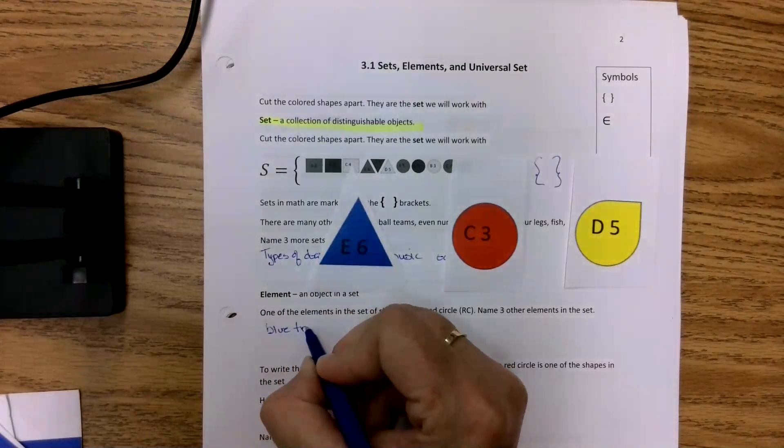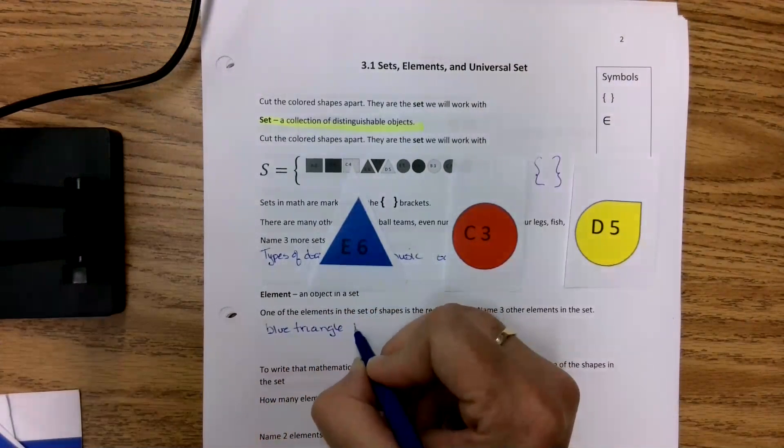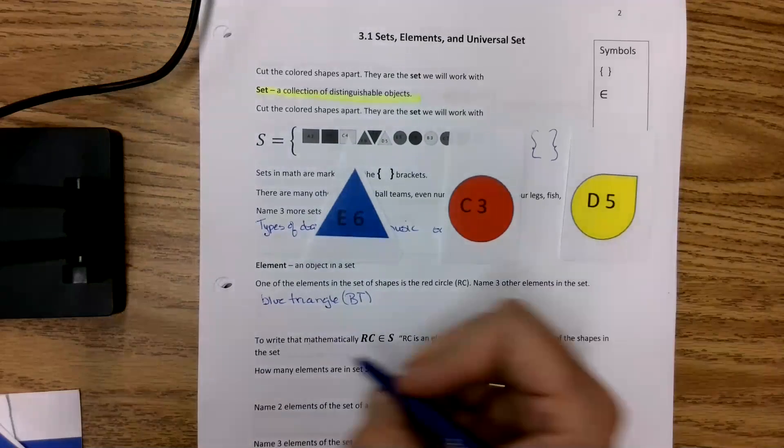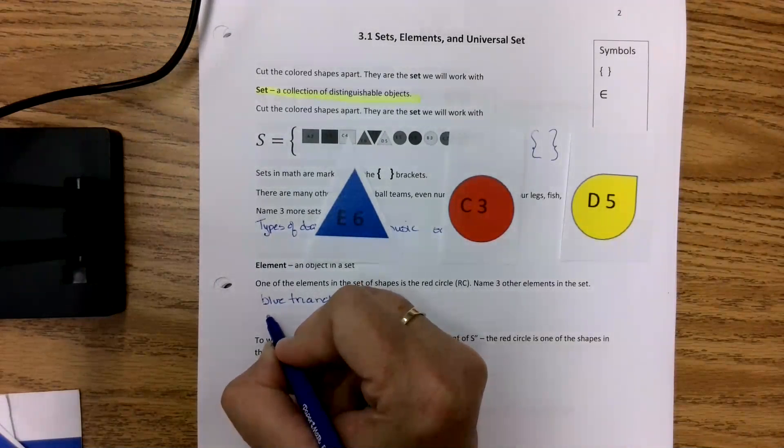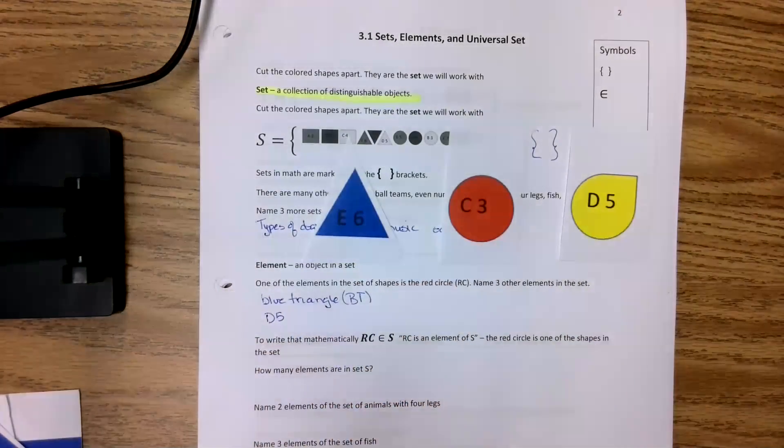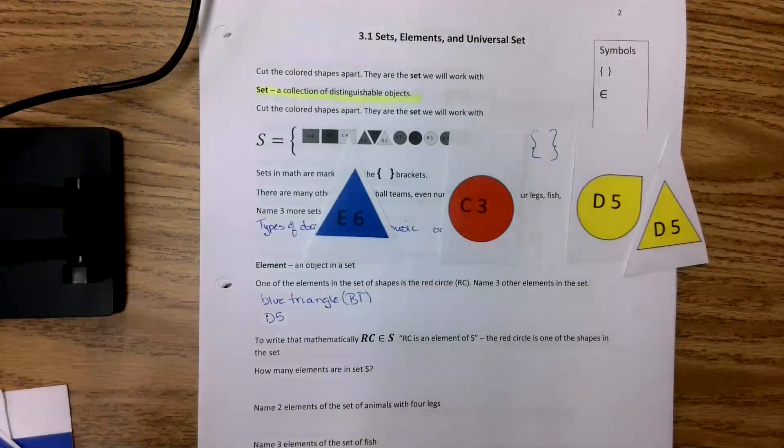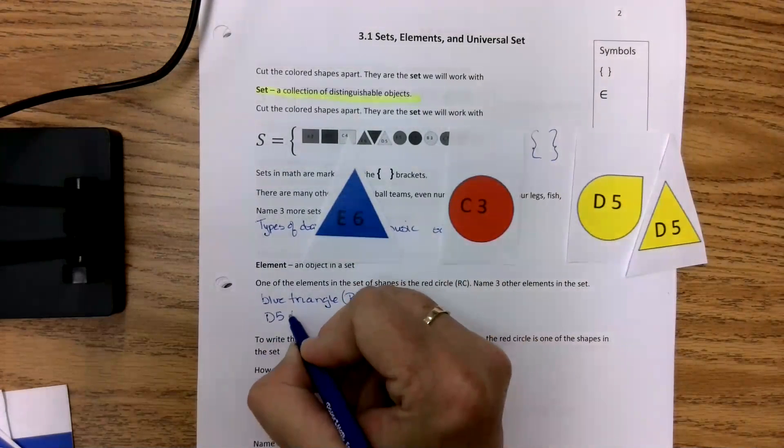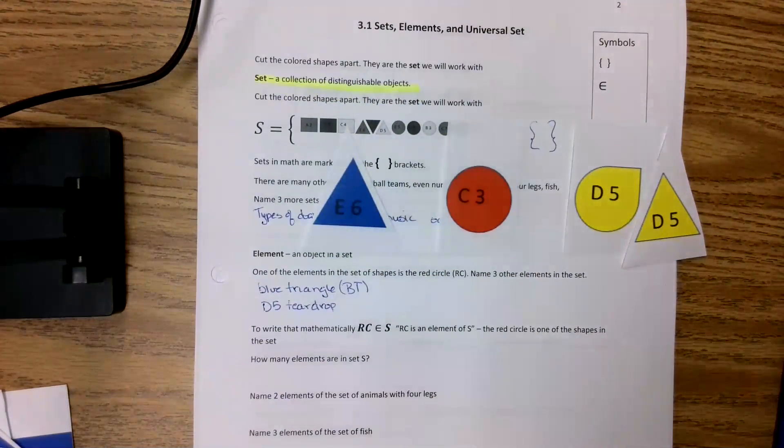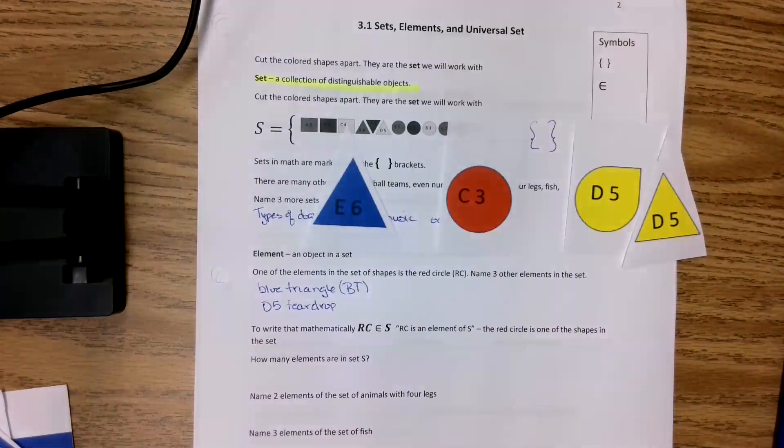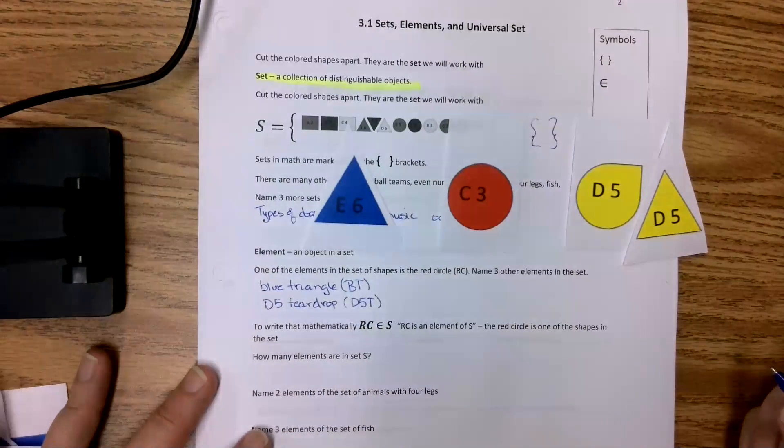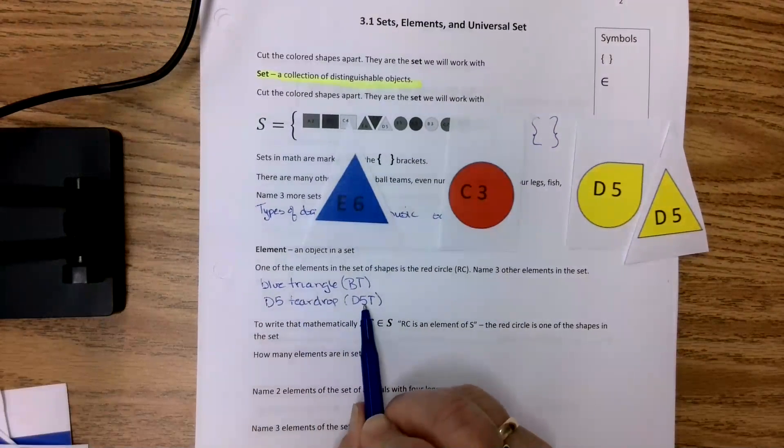So blue triangle, let's call it BT, because we're lazy. Math is lazy. We always want to find shortcuts for things. Shape D5. I've got to be careful because there are two of them labeled D5. So I better call it D5 teardrop. Or I could have called it yellow teardrop. That doesn't matter. D5 teardrop. I'm making those up as we go along because as long as you give me the definition and the shorthand you use for it, it's right.